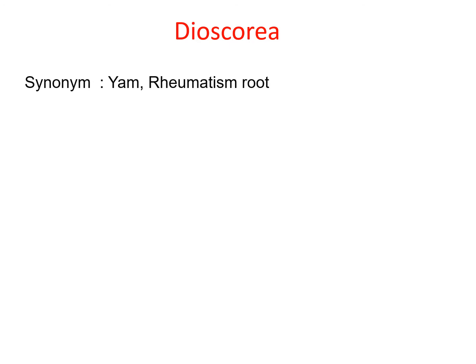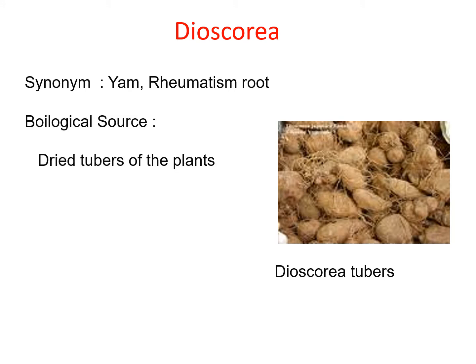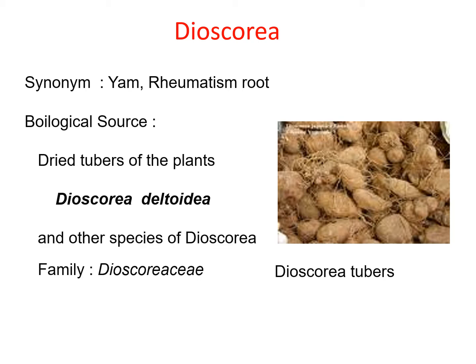Today we will go for Dioscoria crude drug. The synonym of Dioscoria is YAM and it is very famous as Rheumatism root. This root is shown in the picture. Biologically, Dioscoria consists of the dry tubers of the plant Dioscoria deltoida and other species of Dioscoria, which belongs to family Dioscoriaceae.